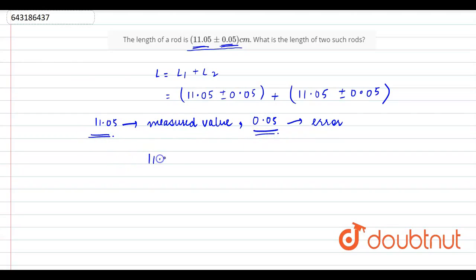So, we will add the measured value here. 11.05, 11.05. So, we will get 22.10.